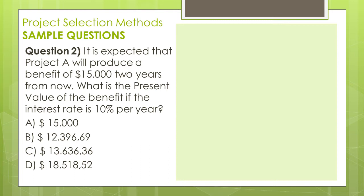The answer is B. First, let's remember the formula for present value. Present value equals future value divided by the result of (1 plus interest rate) raised to the power of the number of time periods.